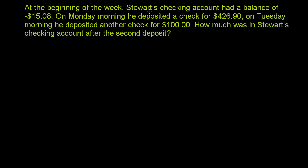At the beginning of the week, Stewart's checking account had a balance of negative $15.08, so he owed the bank money — he overdrew his checking account. On Monday morning, he deposited a check for $426.90. On Tuesday morning, he deposited another check for $100. How much was in Stewart's checking account after the second deposit?